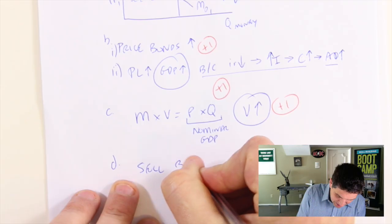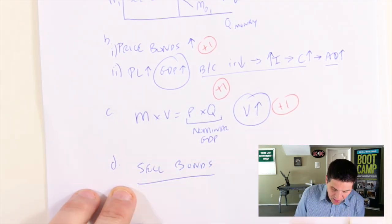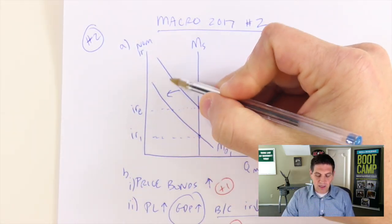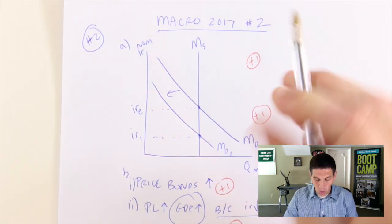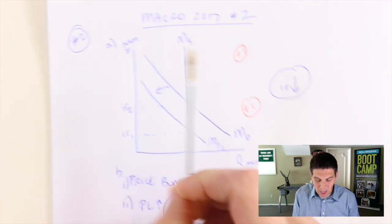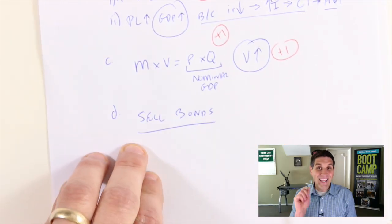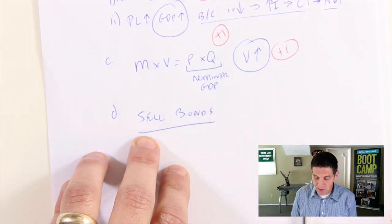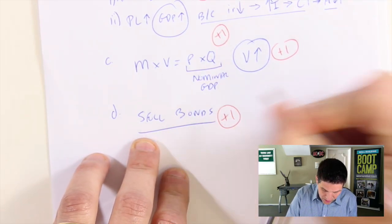The Fed can sell bonds. If the central bank sells bonds, that decreases the money supply. Going back to the graph, decreasing the money supply shifts it to the left, causing interest rates to go back up to where they were before. That's what they're looking for. To decrease money supply, the central bank sells bonds. That's worth another point.